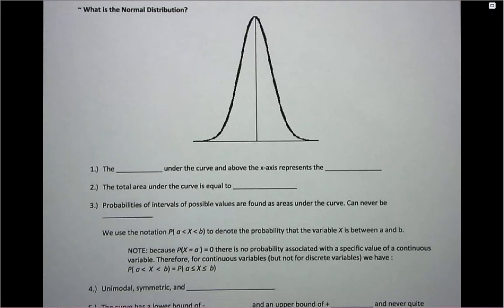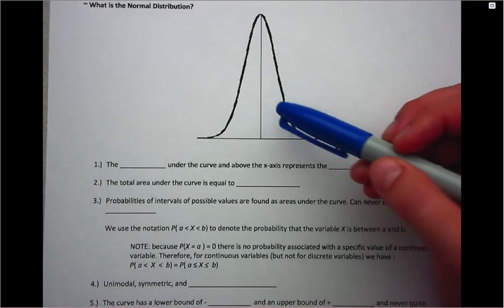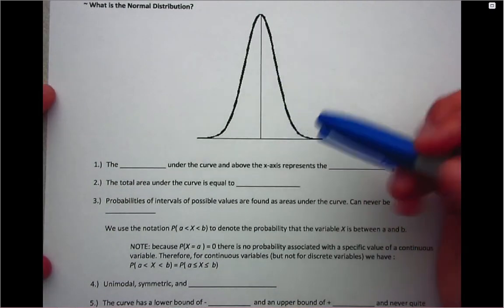We've discussed the normal distribution within the chapter discussing the analysis of one categorical variable. Today we're going to learn some rules about that normal distribution. This is the look of the normal distribution. The normal distribution means that if you were to graph all of the values represented in a data set, it would have this particular shape to it.